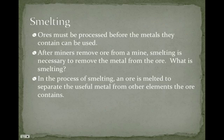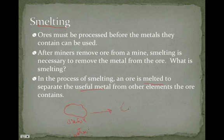Smelting contains the word 'melting,' so you know it involves very high heat. Ores must be processed before the metals they contain can be used. After miners remove ore from a mine, smelting is necessary to remove the metal from the ore. The process involves melting the ore to separate the useful metal from the other elements the ore contains. We start with a sample containing useful material and other material, and by melting it we can begin to separate them — though it's not that simple, and oftentimes the unwanted material has to combine with something else to be removed.